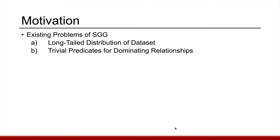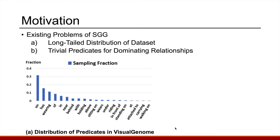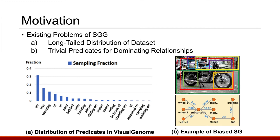This paper aims to tackle the existing long-tail distribution problem of scene graph generation, which is also commonly observed in most real-world data. The problem is not just making existing methods highly biased, it also causes the model to predict only trivial relationships simply because of their higher frequency. For example, trivial predicates like 'on' or 'near' dominate the output scene graph.